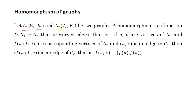Let g1 = (v1, e1) and g2 = (v2, e2) be two graphs. A homomorphism is a function f from g1 to g2 that preserves edges. This means if u and v are vertices of g1 and f(u) and f(v) are the corresponding vertices of g2, and if (u, v) is an edge in g1, then (f(u), f(v)) must be an edge of g2.